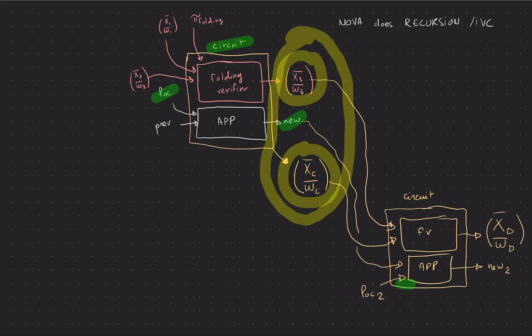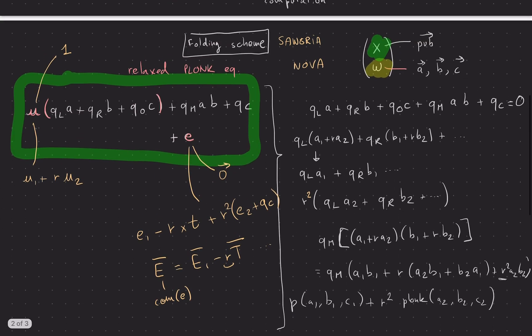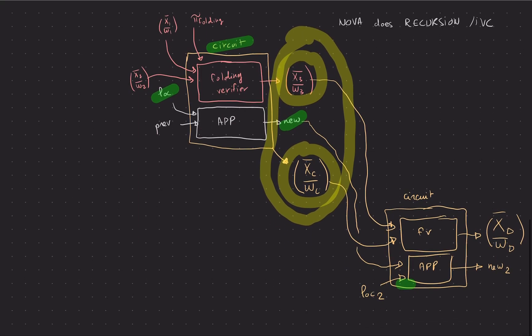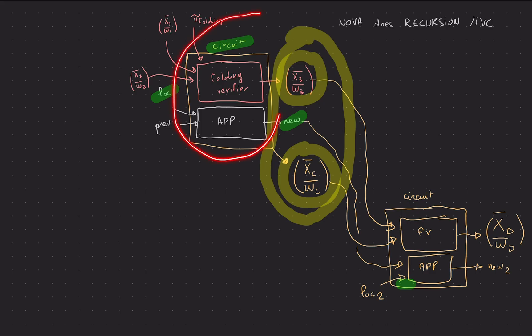But yeah, really the recap here is that you need a folding scheme such that a prover can fold two instance witness pairs and a verifier can verify and do that on their own as well. And then you build things this way with a circuit that has your application logic and a folding verifier inside of it, and this is how you end up folding.